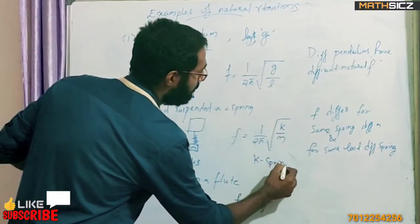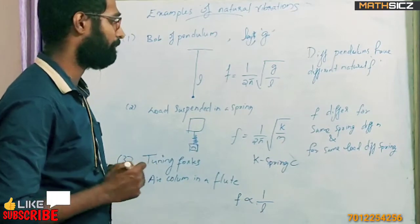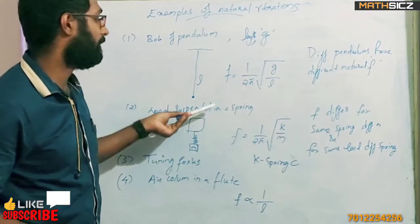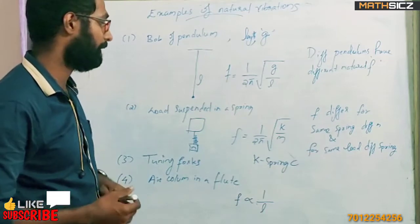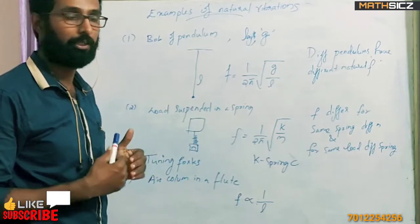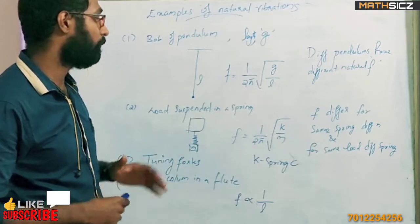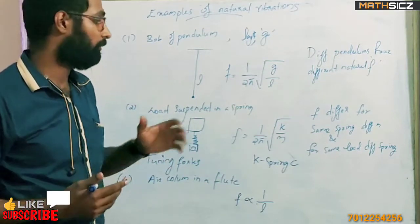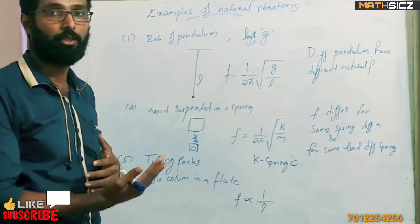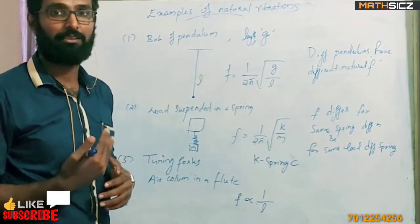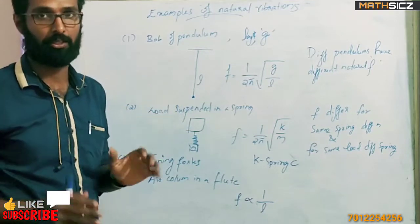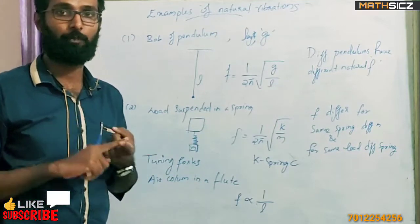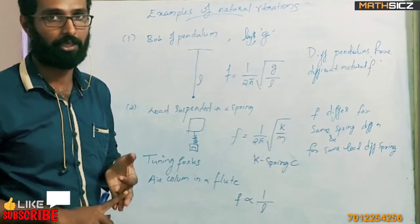What is m? It is the mass suspended. How does the natural frequency depend on it? The spring constant is the stiffness of the spring for the load suspended. If the spring is changed, it will change the natural frequency. At any one time, the natural frequency will be constant for a given spring-mass system.